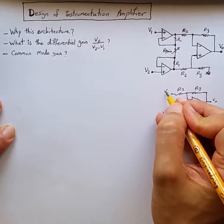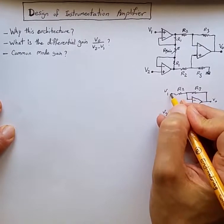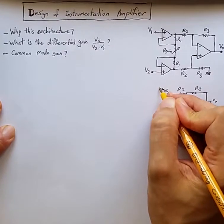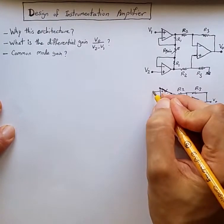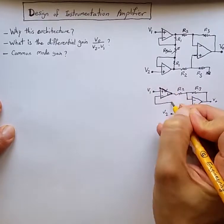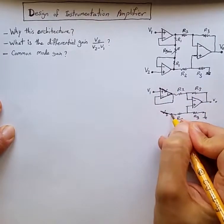So the easiest way would be buffering these guys using another set of op amps like this, V1 and then that one and the same thing for V2.